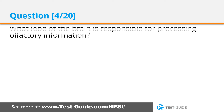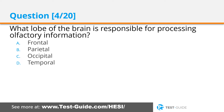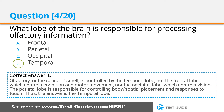Question four: What lobe of the brain is responsible for processing olfactory information? Options: frontal, parietal, occipital, temporal. Correct answer D. Olfactory, or the sense of smell, is controlled by the temporal lobe — not the frontal lobe, which controls cognition and motor movement, nor the occipital lobe, which controls vision. The parietal lobe is responsible for controlling body and spatial placement in responses to touch. Thus, the answer is the temporal lobe.